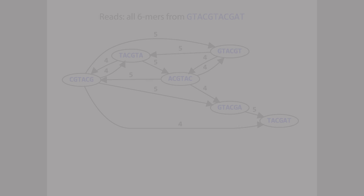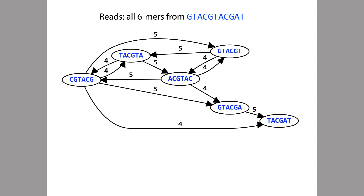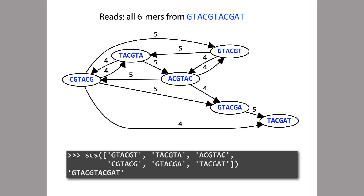Here's our overlap graph from the previous lecture, built from a synthetic dataset containing all the six-mers of the genome. We take all these six-mers and throw them into an algorithm that solves the SCS problem. Here I have Python code that calls a function called scs, which we haven't implemented yet but will in an upcoming practical. We pass in a list of read sequences, and what we get back is the shortest common superstring — which is equal to the genome that we derived the reads from.